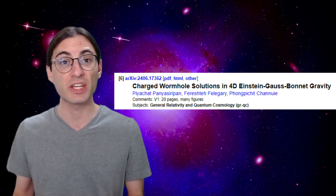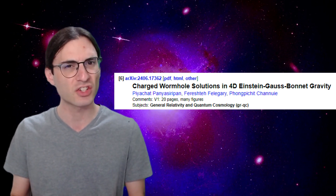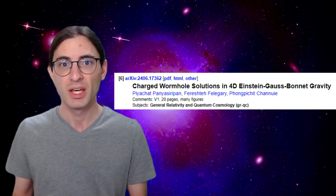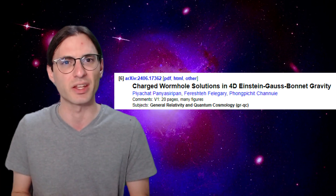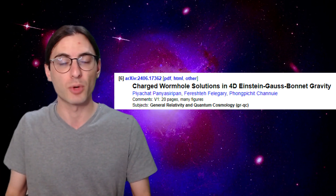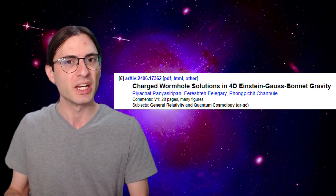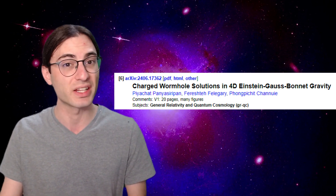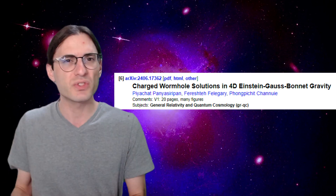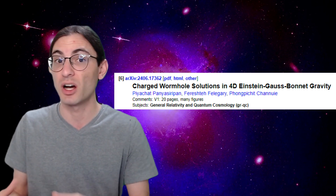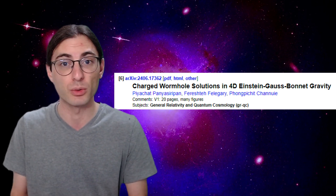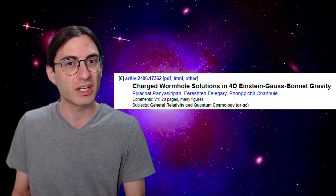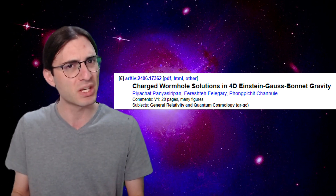Next on the list is Einstein-Gauss-Bonnet gravity, which is a modification to Einstein's general relativity by the addition of a so-called topological term. By adding a term of this type to the Einstein-Hilbert action, the metric field equations change ever so slightly. Gravitational waves can still propagate exactly as they do in GR, but cosmological solutions behave slightly differently. In particular, those solutions match the solutions found via holographic approaches to cosmology, and the same can actually be said for black hole solutions. This makes EGB gravity an intriguing possibility that might be easier to quantize.